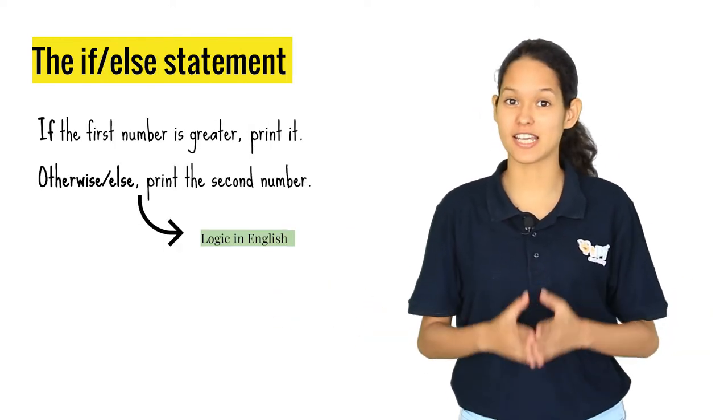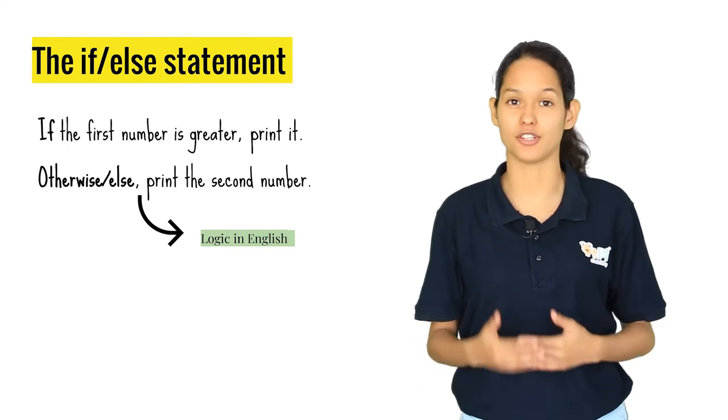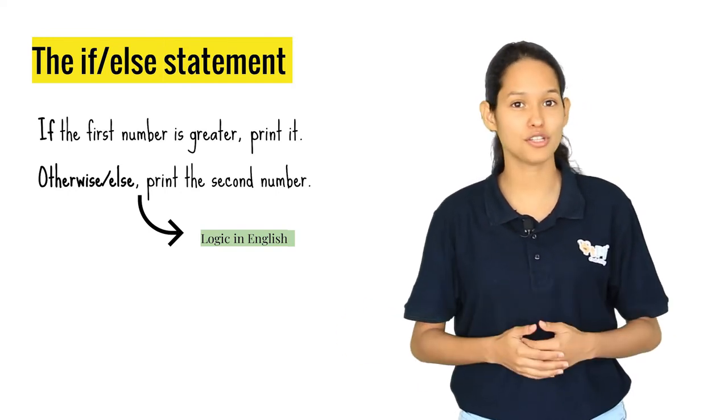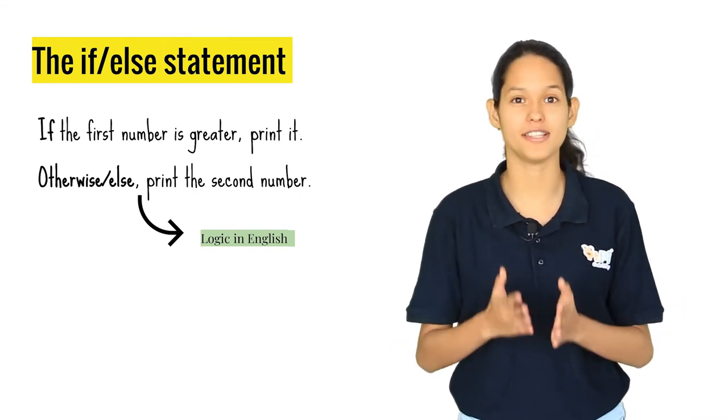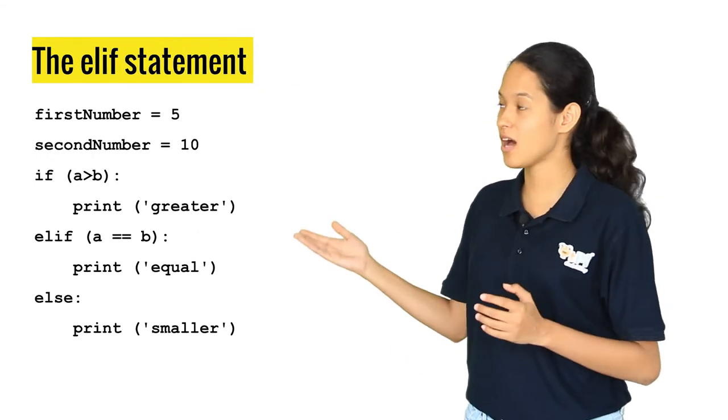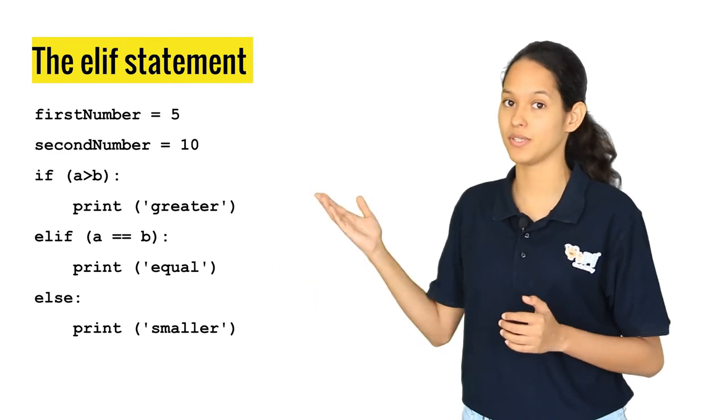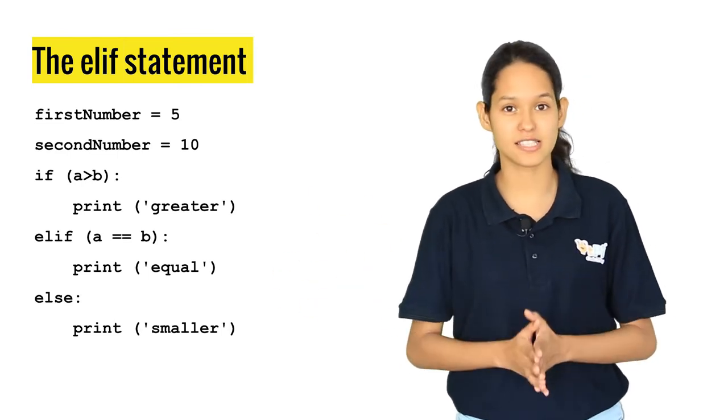Next is the if else statement. In this condition, it checks if the condition is true and executes the code under the if statement. If the condition is false, it executes the code in the else statement. In this example, it compares the first number with the second number and prints the statements accordingly.